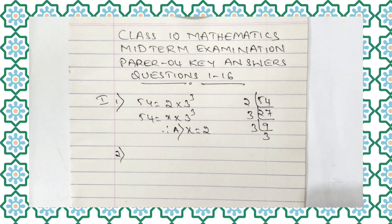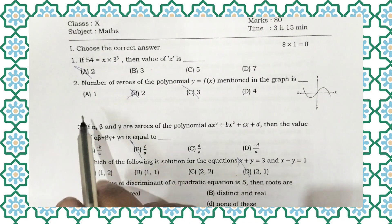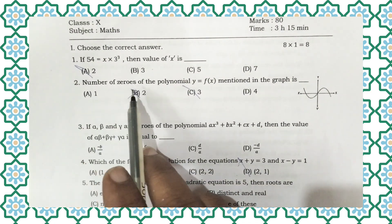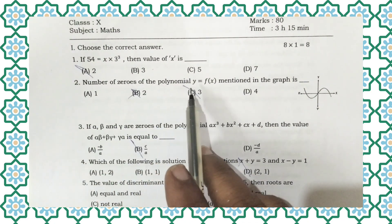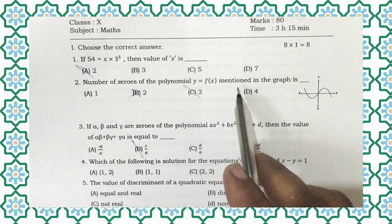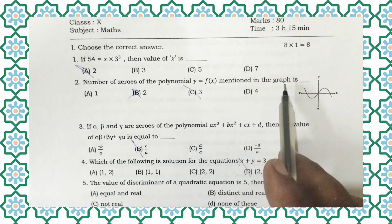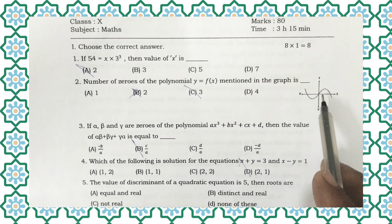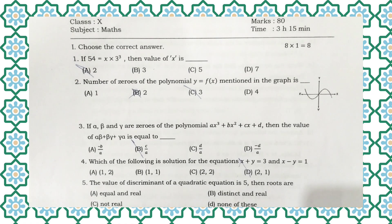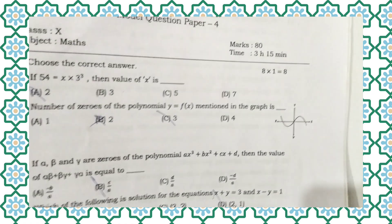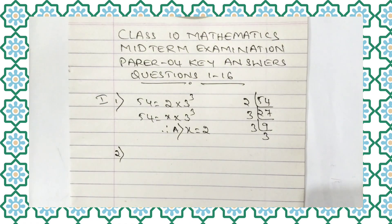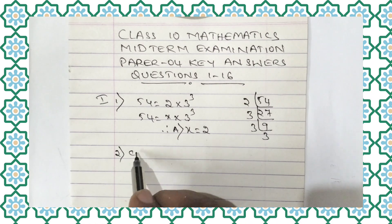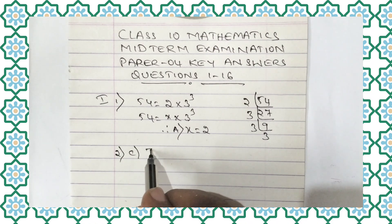Now let us move to question number 2. The number of zeros of the polynomial y equals f(x) mentioned in the graph — there are three zeros. So for this question, the right option is option C, 3.